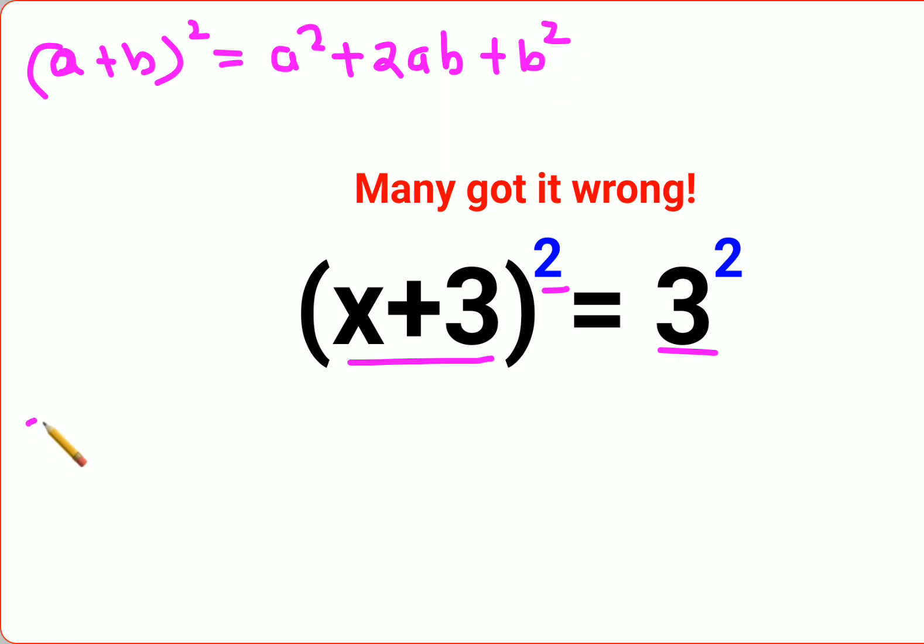So this can be written as what x² + 2 × 3x + 3² = 3².